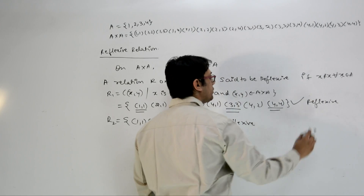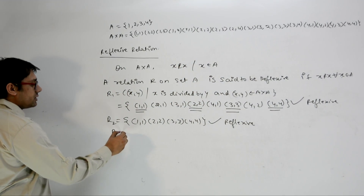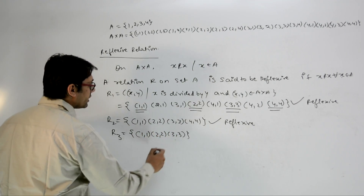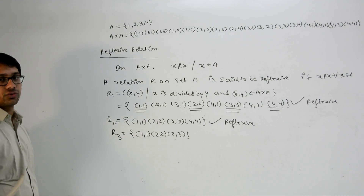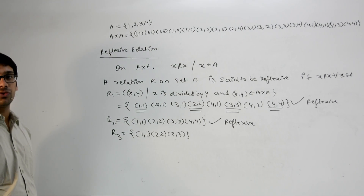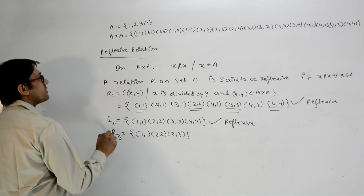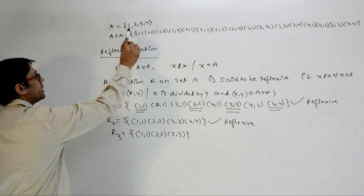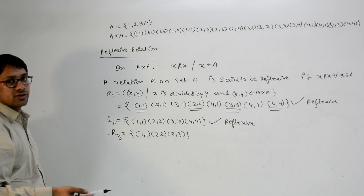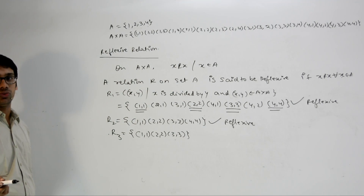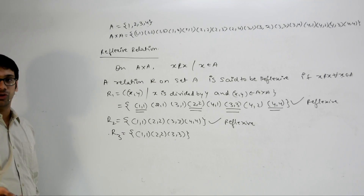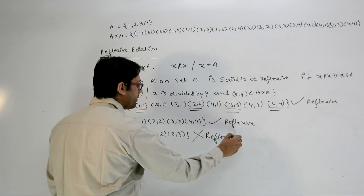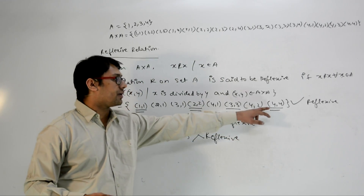If we define relation R2 containing only the elements (1,1), (2,2), (3,3), and (4,4), this relation R2 is also reflexive. However, if we define relation R3 containing (1,1), (2,2), and (3,3) but not containing the ordered pair (4,4), then this relation is not reflexive — because it does not contain the ordered pair (4,4).